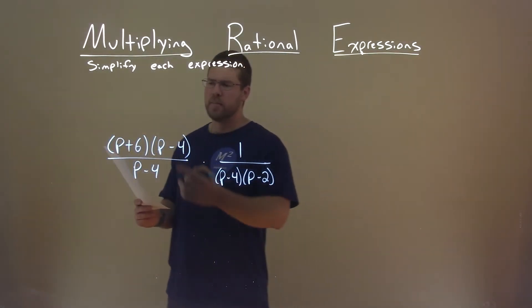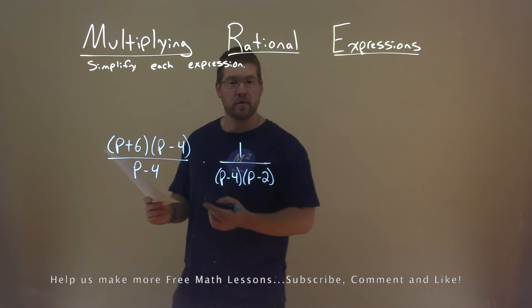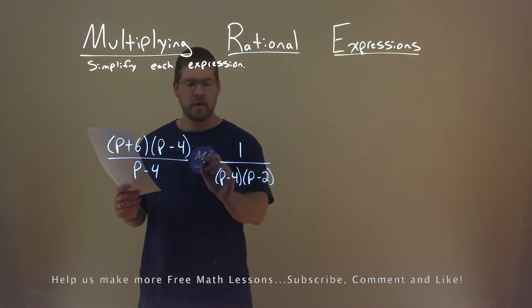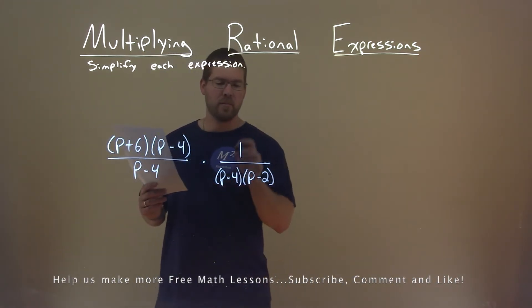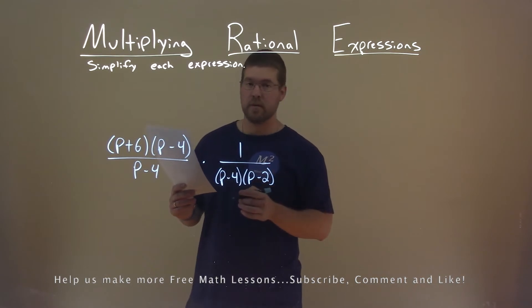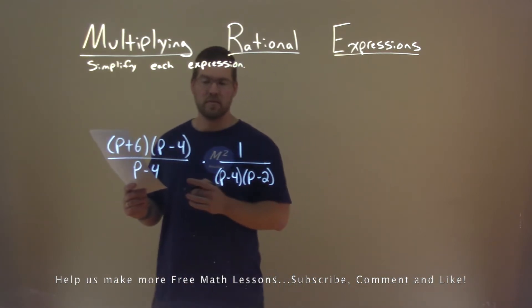We're given this problem right here: p plus 6 times p minus 4 divided by p minus 4, times 1 divided by p minus 4 times p minus 2, and we want to simplify this expression.